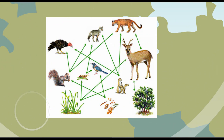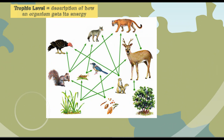Here is a classic food web. A trophic level is actually a description of how an organism gets its energy. Let's look at some of the trophic levels depicted here.